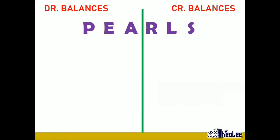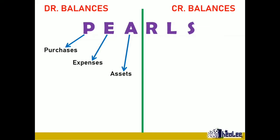What does the P stand for? P stands for purchases. So your purchases carry a debit balance — you can check when you prepare your ledger account and balance up where the balance falls for your purchases. Expenses also carry debit balances just the same. And A is for assets, so those items carry debit balances.